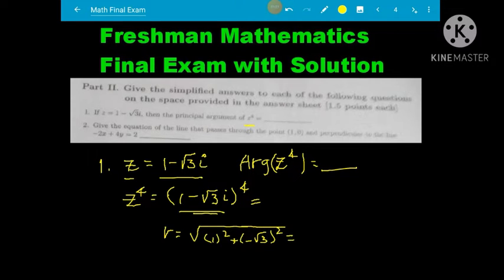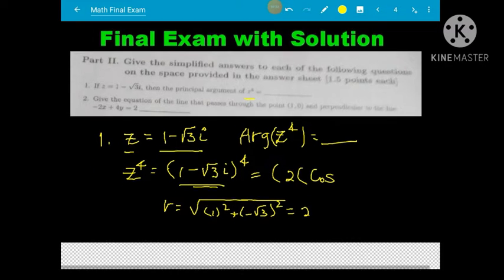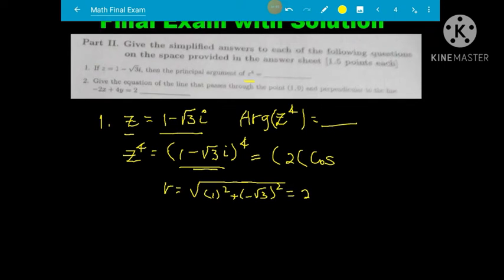So r equals 2, giving us 2 times cosine theta plus i sine theta. Now let's calculate theta equal to arctan of y over x.